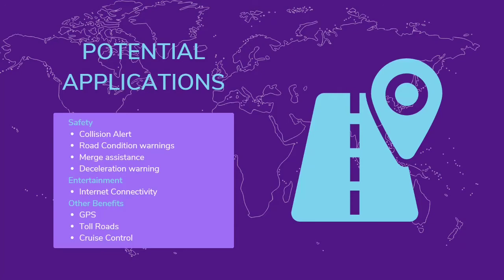GPS and navigation systems can also benefit from VANET communications. They can be integrated with traffic reports, therefore being able to provide the fastest route to an end user's destination. Toll roads can also benefit from VANET by automatically collecting tolls.